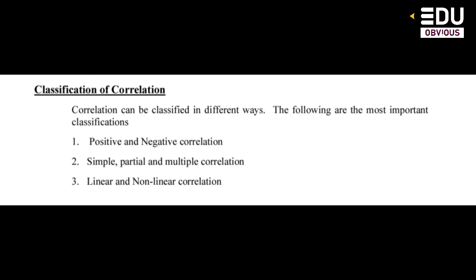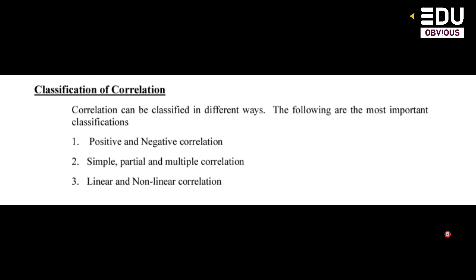There are three different types of correlation classification. First: positive and negative correlation. Second: simple, partial, and multiple correlation. Third: linear and non-linear correlation. Let's look at each of these three types.